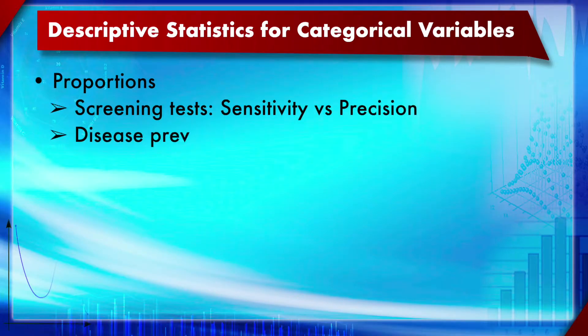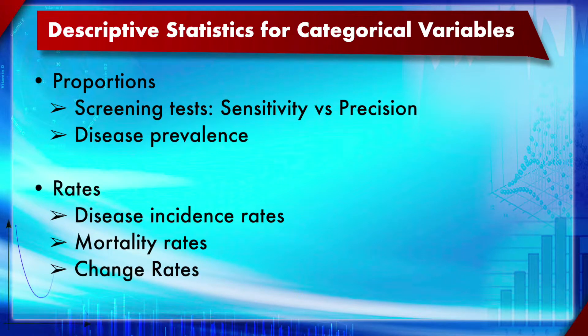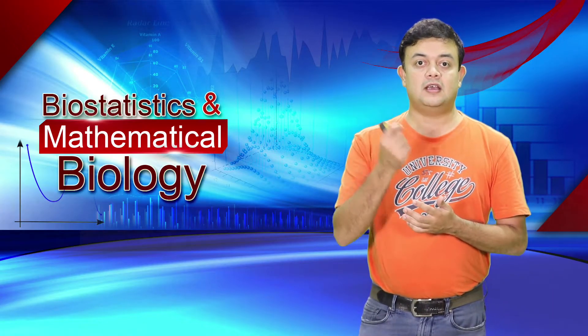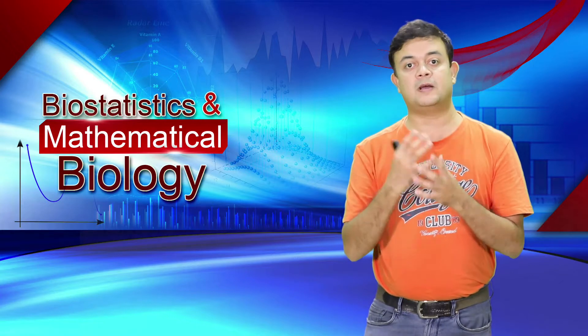For descriptive statistics of categorical variables, we use proportions - especially for screening tests like sensitivity and precision, disease prevalence, and disease incidence rate. Rates such as mortality rates and change rates involve an element of time, which is why they are called rates rather than simple proportions. A proportion is simply a number divided by the total.